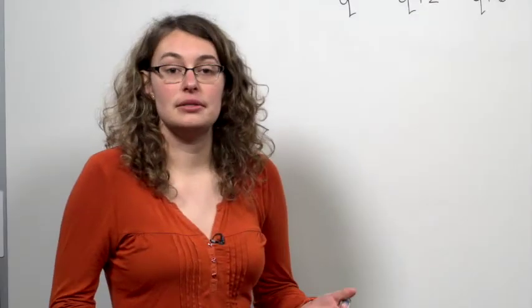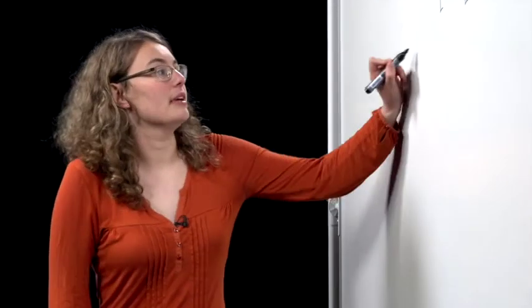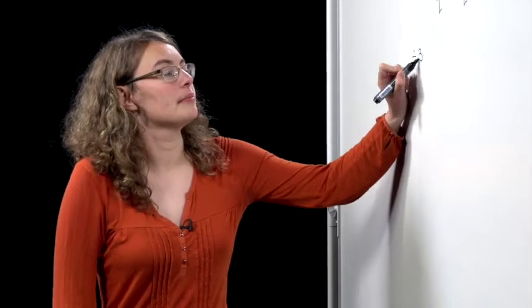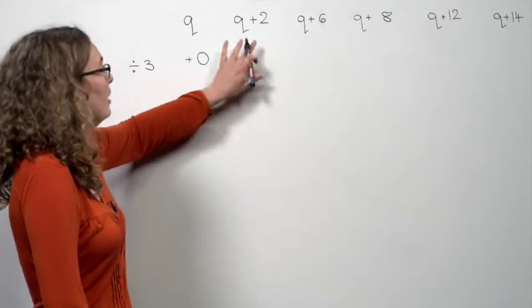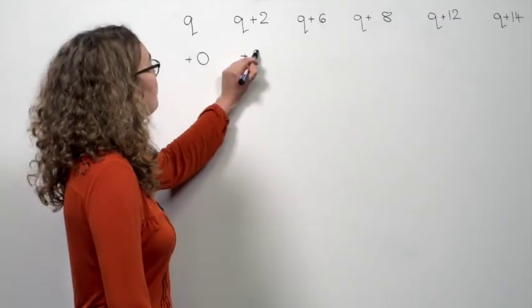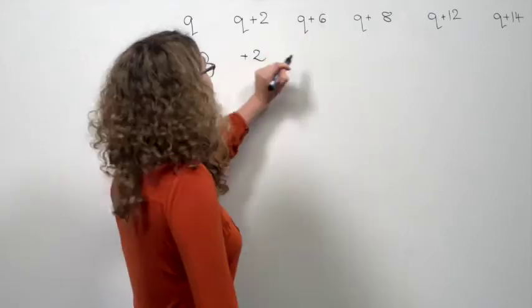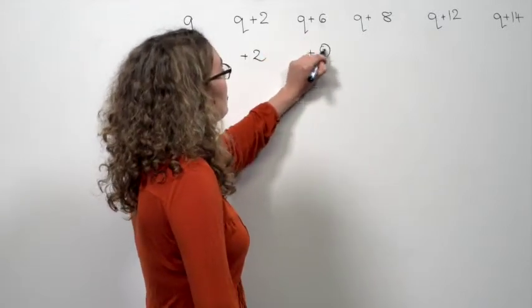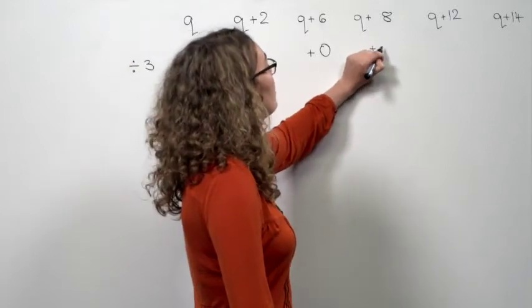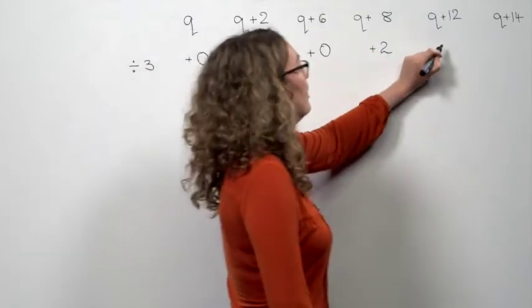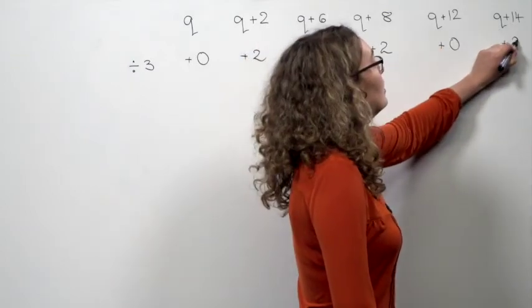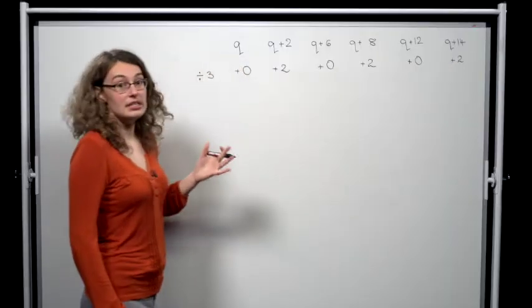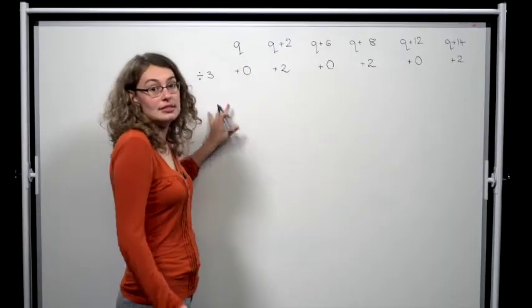So now, let's try that approach with the original problem. So, let's look at what remainder we get when we divide by 3. Here, we have q plus 0. Here, q plus 2, so plus 2, plus 6, but 6 leaves remainder 0, plus 8, which is going to leave remainder 2, plus 12, again remainder 0, and plus 14, that is remainder plus 2. Now, the difference here is that nothing has given us plus 1.